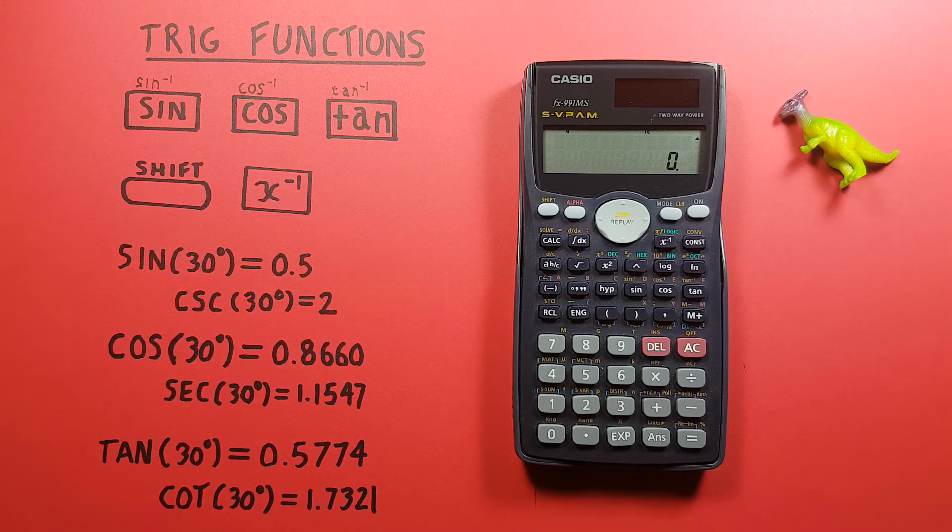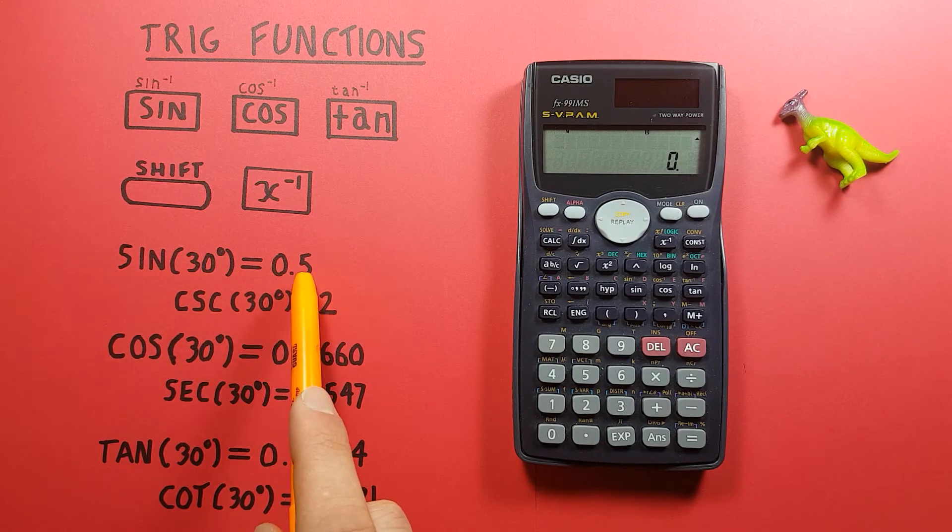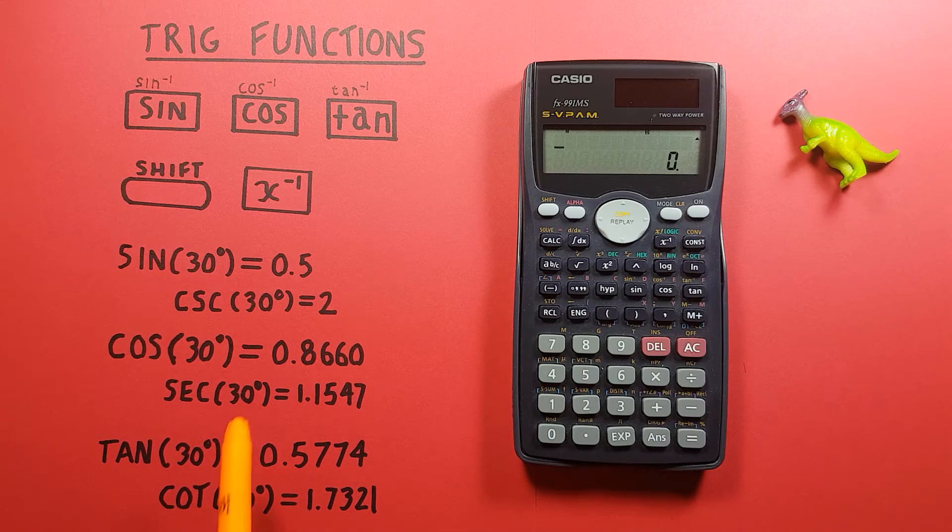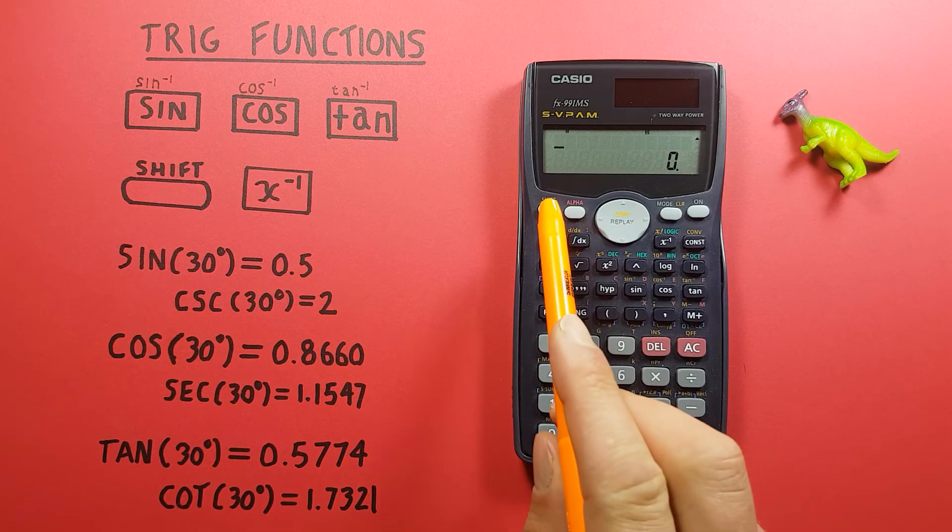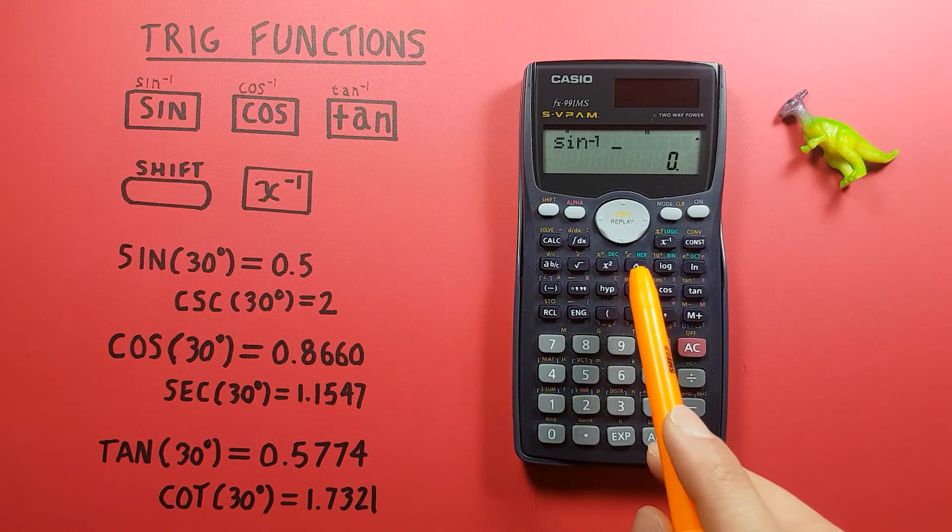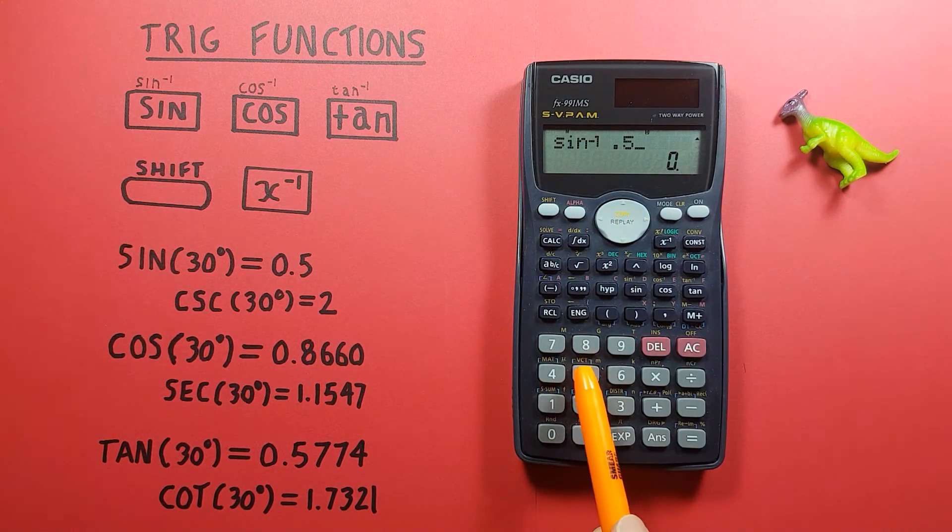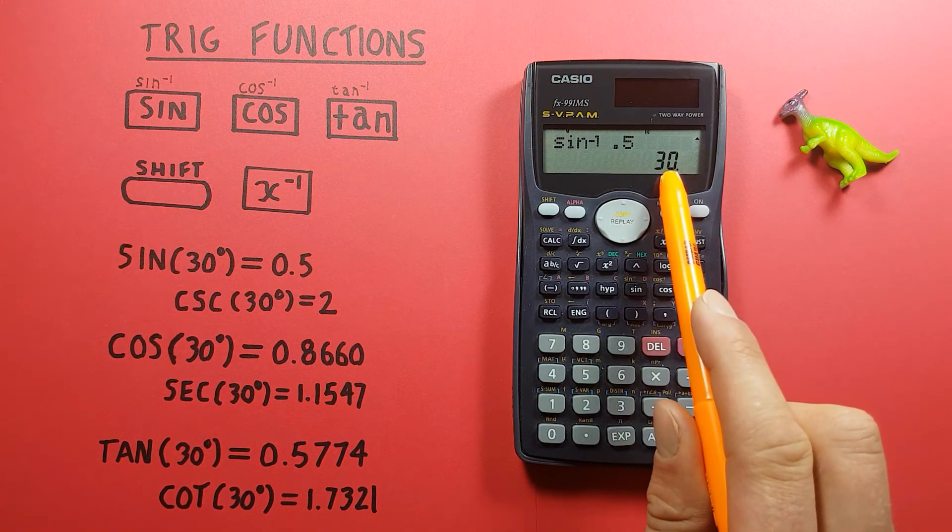And we use these to go from the result of say a sine 30 degrees which gave us 0.5 back to the degrees. So if we wanted to find out how many degrees were used to get 0.5 we would use shift sine. So we get sine minus 1, 0.5 and equals and we see this brings us back to 30 degrees.